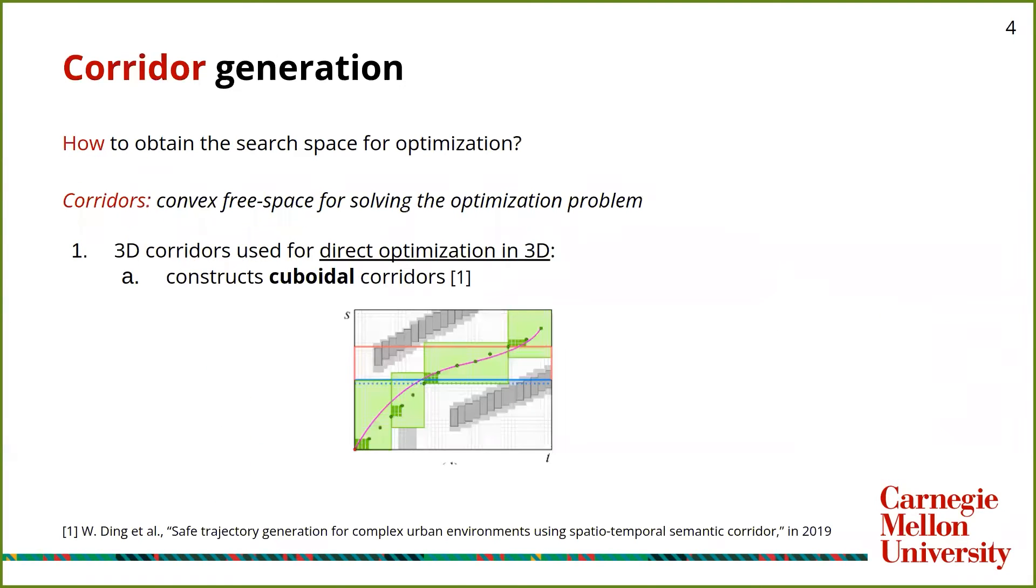So how to solve the optimization problem and how to obtain this old space for it? We construct a series of convex spaces connected to each other which lie in the non-convex free space we saw in the last slide. Each of these convex regions is termed as a corridor. We construct a piece of trajectory in each corridor, and joining all of them gives us one final trajectory.